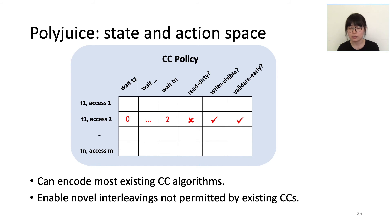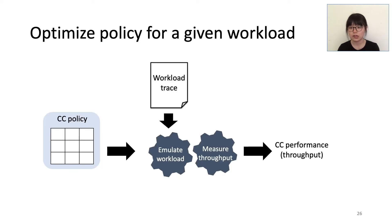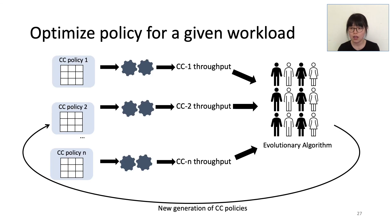The state and action-based design can encode most existing CC algorithms and enable novel interleavings not permitted by existing CCs. Based on this learning framework, Polyjuice uses offline training to optimize the policy for a given workload. It emulates the workload based on the transactions and runs the workload with actions specified in the policy to evaluate CC performance. Polyjuice uses an evolutionary algorithm to train for the optimal CC policy — the EA agent evaluates throughput of several CC candidates, selects top performers, and outputs a new generation of CC policies for the next iteration.